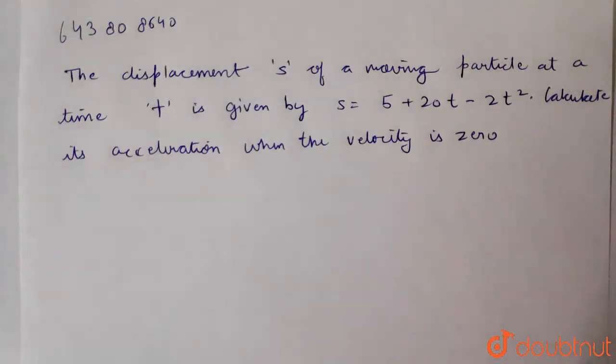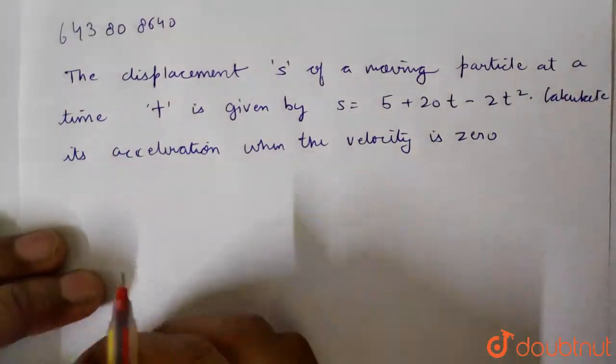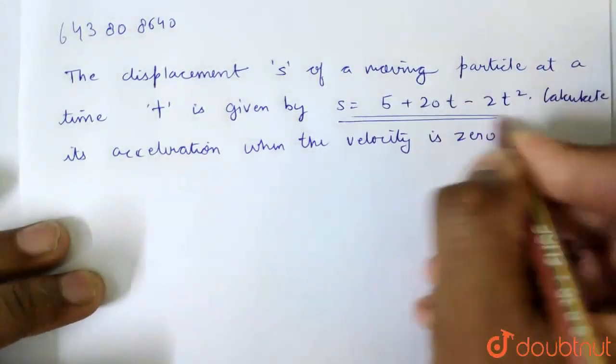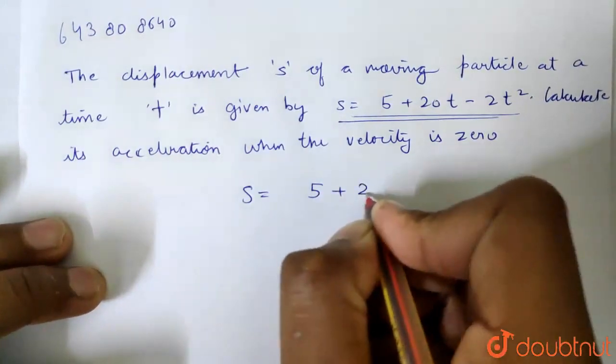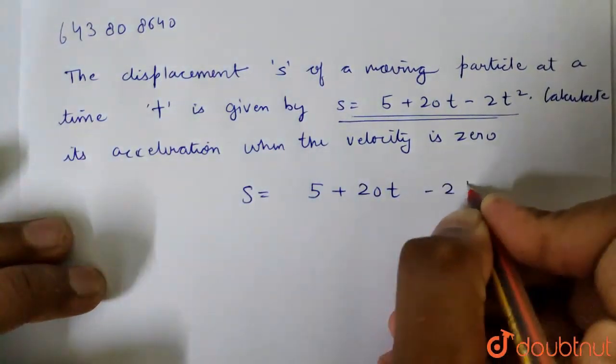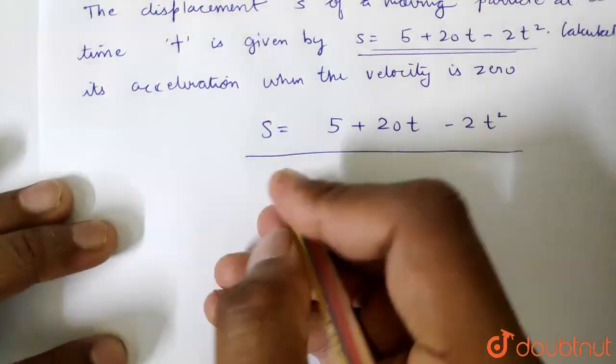The displacement s of a moving particle at a time t is given by s = 5 + 20t - 2t². This is the relation given for displacement and time. We are asked to calculate its acceleration when the velocity is 0. So when the velocity is 0, we have the distance and time function: s = 5 + 20t - 2t². So what do we do?